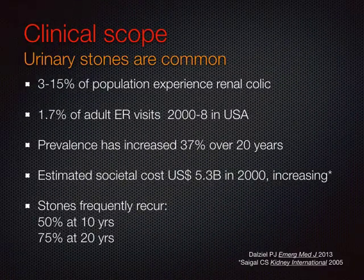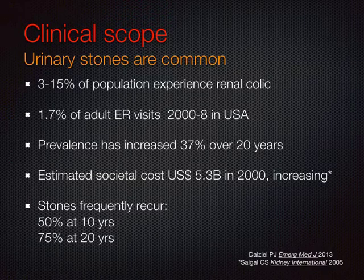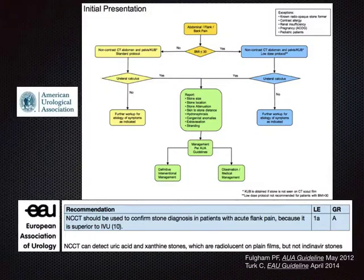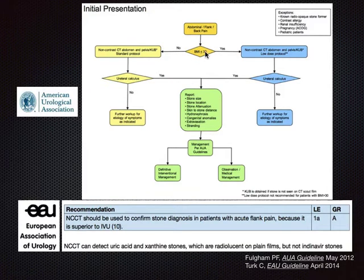Urinary tract stones are a common disorder. They're a source of significant morbidity. They're increasing in prevalence, they're very costly, and they frequently recur. Moving right to imaging strategies in the acutely symptomatic patient, the current standard of practice globally is to use non-enhanced CT as the initial screening modality, unless the patient is pregnant or a pediatric patient, in which case ultrasound is the standard of care. The single most important initial decision from an imaging standpoint is to determine the size of the patient.